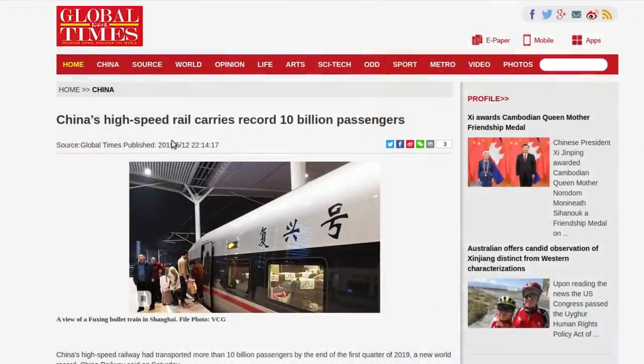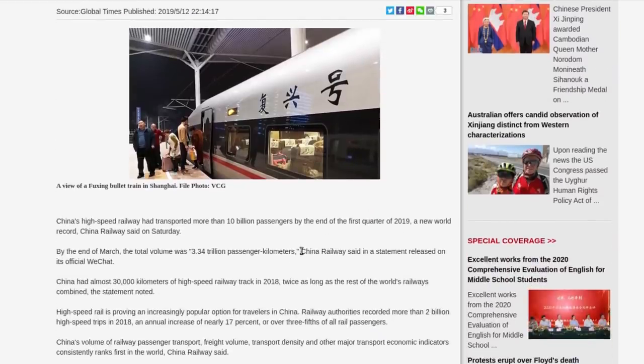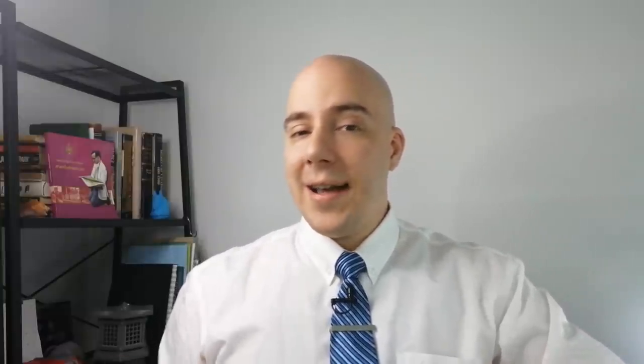So this is from Global Times. This is Chinese state media. China's high-speed rail carries record 10 billion passengers. 10 billion passengers. That's more than there are people on earth. If you remember, years ago, the West was saying that China was wasting its time and money building this high-speed rail network. Nobody would ride it, they said.